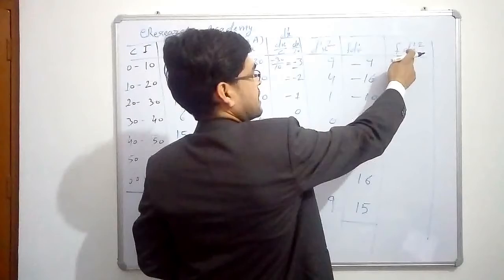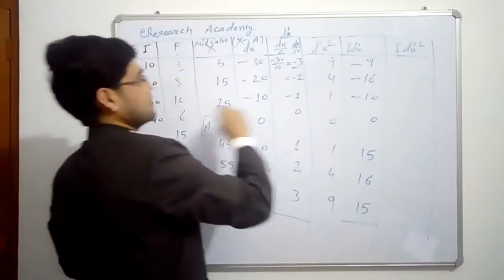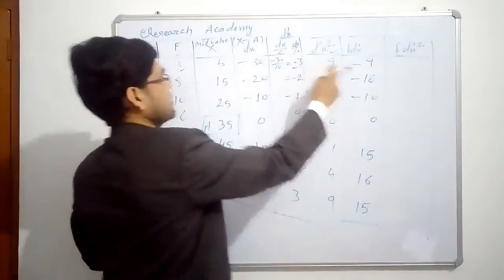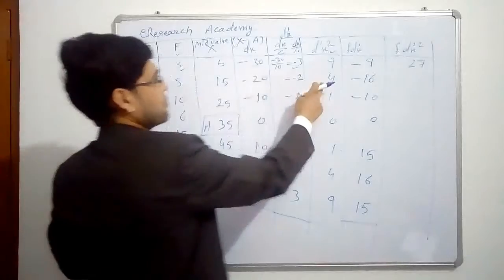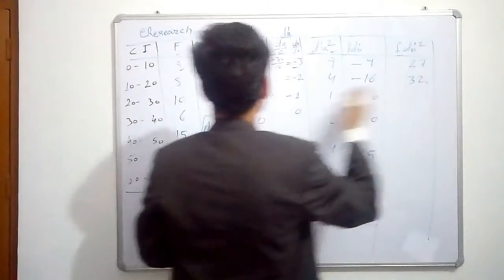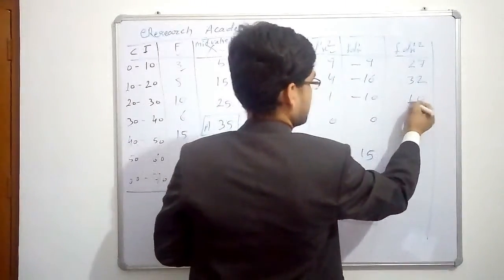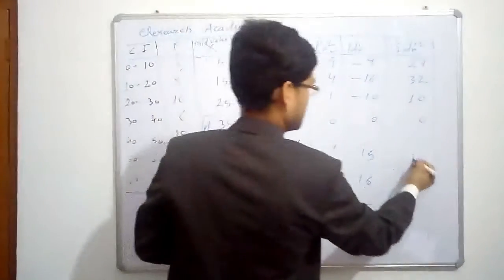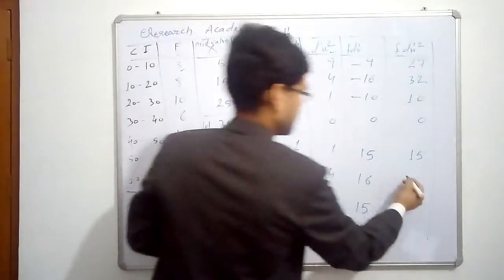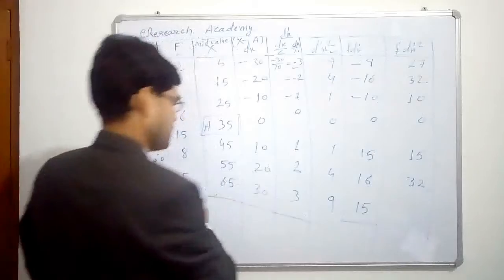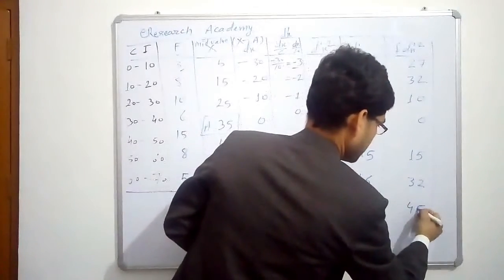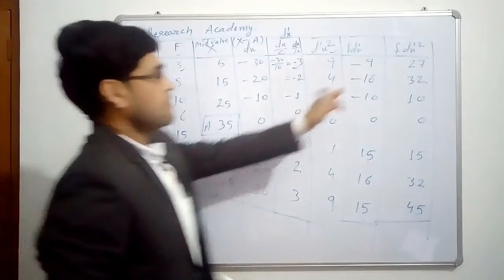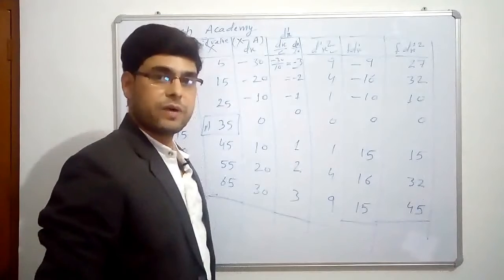Next we need f multiplied by d-x dash square. So we have f again this column and d-x dash square this column. So 3 into 9, 27. 8 into 4, 32. 10 into 1, 10. 6 into 0, 0. 15 into 1, 15. 8 into 4, 32. And 5 into 9, 45. So these are our f d-x dash square.